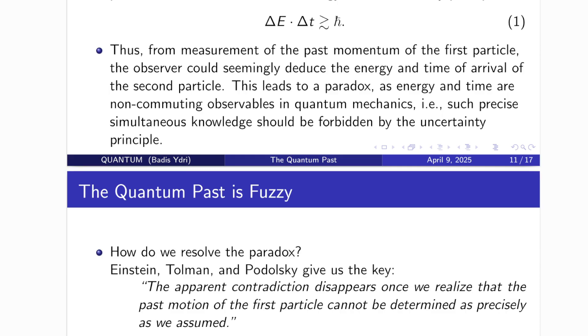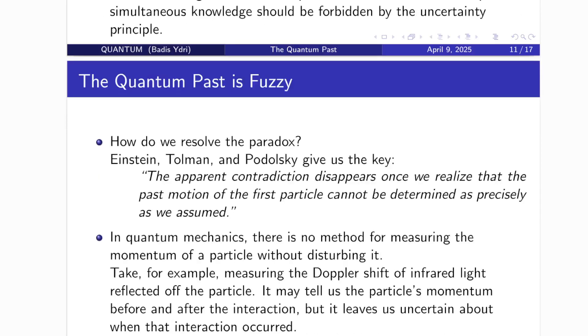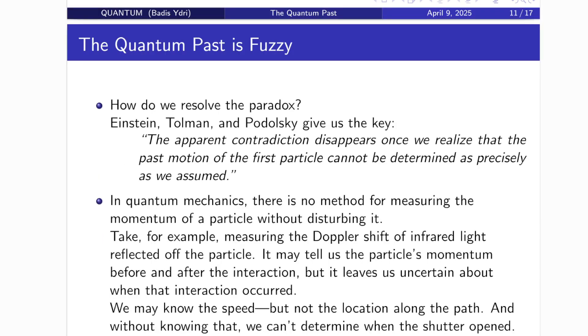Resolving the paradox. The quantum past is fuzzy. So how do we resolve the paradox? Einstein, Tolman, and Podolsky point us to the heart of the matter. And I quote, The apparent contradiction disappears once we realize that the past motion of the first particle cannot be determined as precisely as we assumed. Let's unpack that.